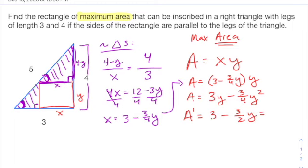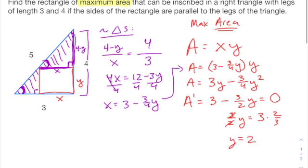And as always, I'm going to get my critical numbers by setting that equal to 0. Also, I would think when it's undefined, but this is never undefined. So we're solving when does 3 halves Y equal 3? So multiply both sides by 2 thirds. And you've got Y is equal to 2. There's my solution.